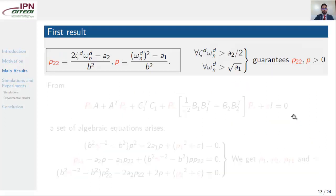So, the first result appears, we have p22 and p, two of the entries of the matrix p-epsilon. Of course, if we want p22 and p to be positive, those conditions here, these conditions here, must be fulfilled.